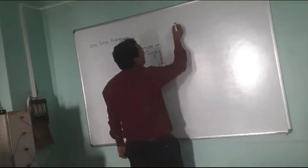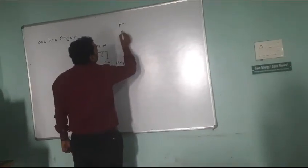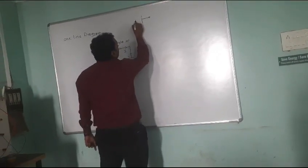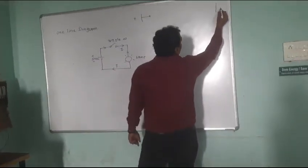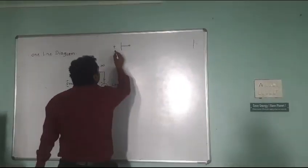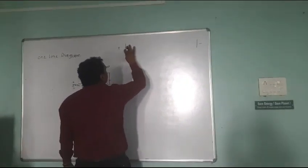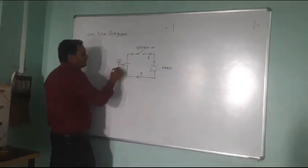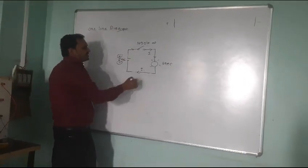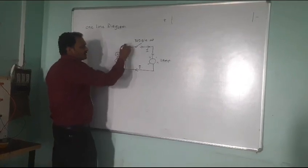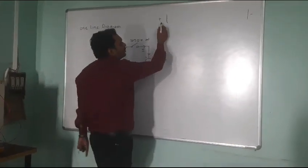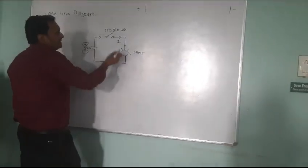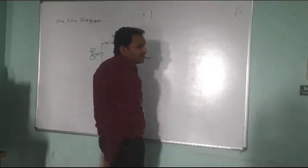Now this same diagram you can draw with the help of the inner aspect of a one line diagram like this. There is a toggle switch. Initially you have to understand there is a plus 5 volt and minus 5 volt. So this is plus and this is minus. In between these two you have to draw your circuit. If you consider this point as plus and this point as minus, the circuit starts from plus and ends at minus. You have to draw that same circuit starting from plus and ending at minus, completing it in a single line manner instead of a looped circuit.